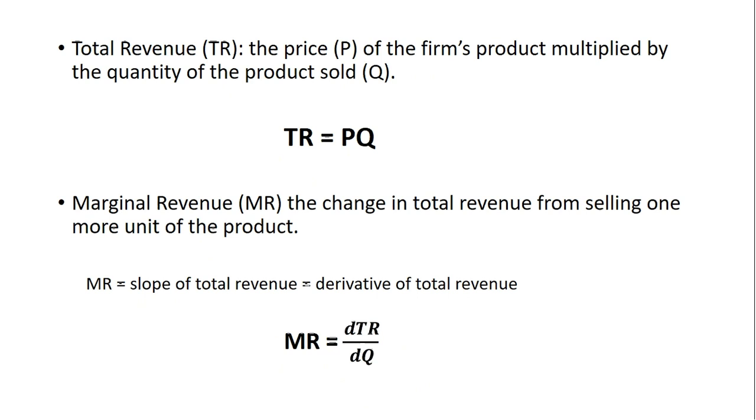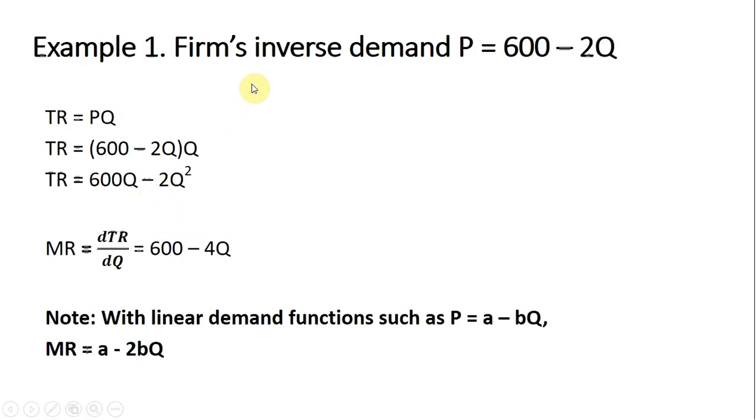So let's do some examples. Example one, we have a firm's inverse demand curve given by price equals 600 minus 2Q. To derive total revenue, we again write our basic expression, total revenue equals price times quantity.